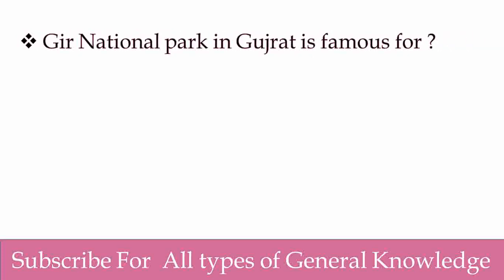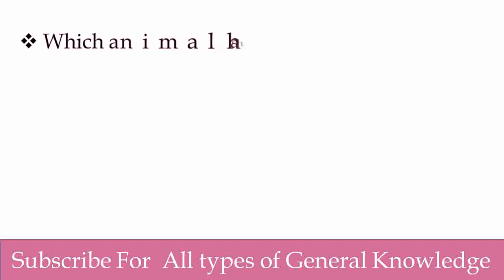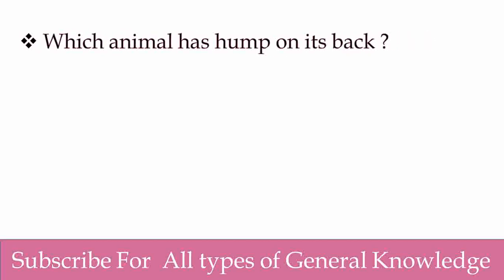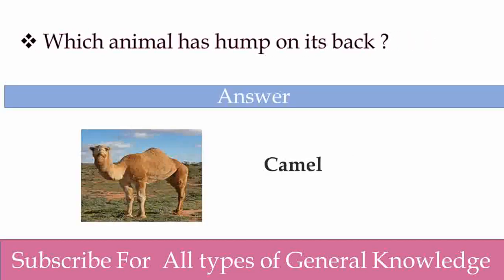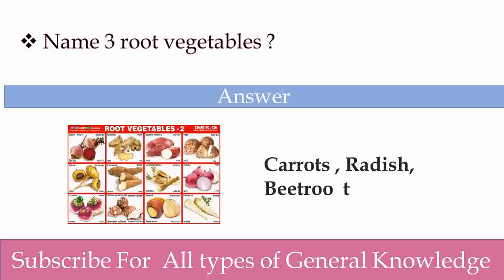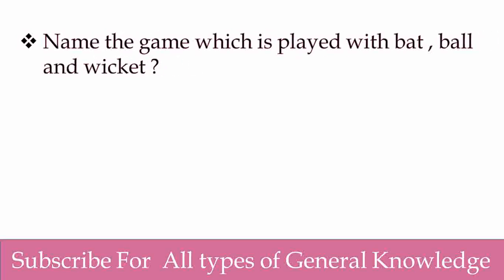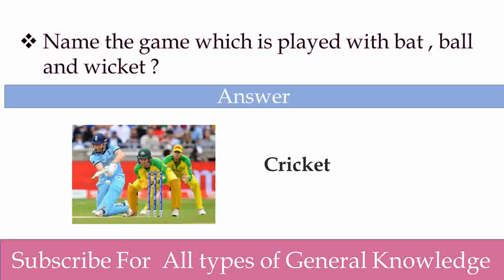Gir National Park in Gujarat is famous for? Lion. Yeah, good. Which animal has a hump on its back? Camel. Yes. Name three root vegetables. Carrots, radish, and beetroot. Name the game which is played with bat, ball, and wicket. Cricket. Yes, good.